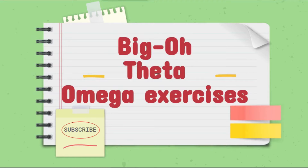In the previous tutorial we talked about asymptotic notation — the Big-O, the Theta, and the Omega notations. Now in this tutorial we're going to take some examples to see how to actually find the Big-O, Theta, and Omega notations. Make sure you have already watched the previous one on asymptotic notation, where we introduced that concept.